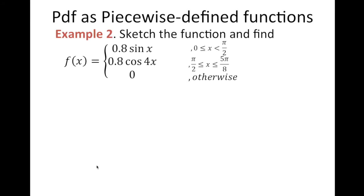Now let's look at example number two. We sketch the function and find f(x) for the piecewise function: f(x) = 0.8 sin x for 0 ≤ x < π/2; f(x) = 0.8 cos(4x) for π/2 ≤ x ≤ 5π/8; and f(x) = 0 otherwise.